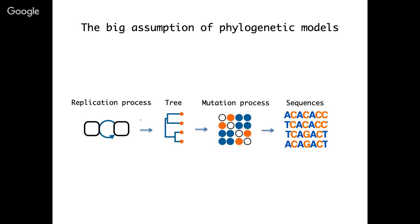The short answer is just that it's hard. Many different approaches have been presented in the literature — including older work on the ancestral selection graph, which incorporated selection into coalescent models. Basically, most phylogenetic models we commonly use assume that there's some underlying replication process by which individuals in a population reproduce. This replication process gives rise to a branching process that generates a phylogenetic tree. Along the lineages of this phylogeny, there's a mutation or substitution process that causes sequences to change through time, giving rise to the sequences observed at the tips.